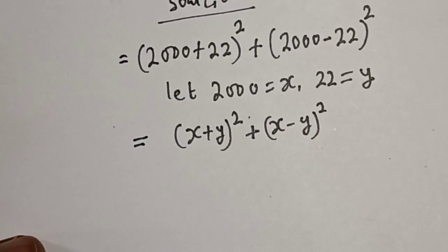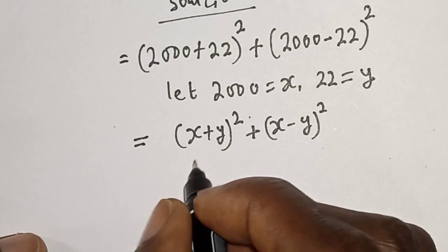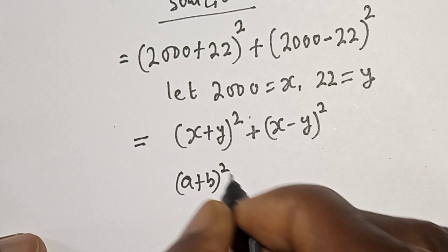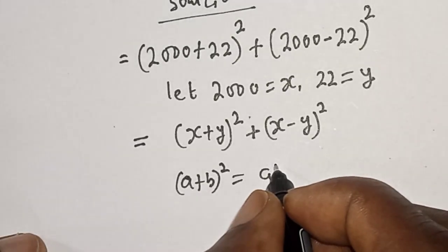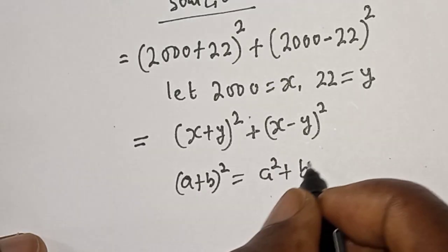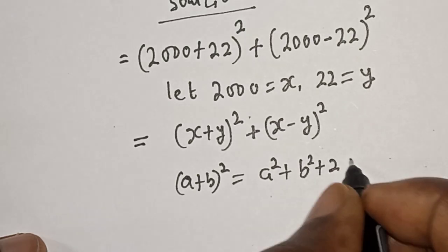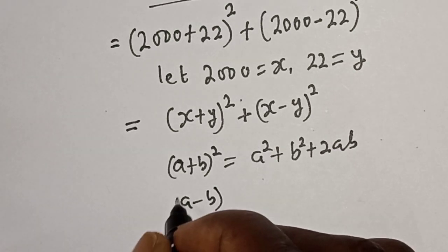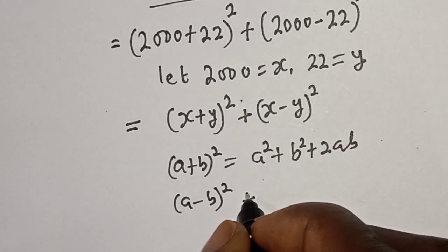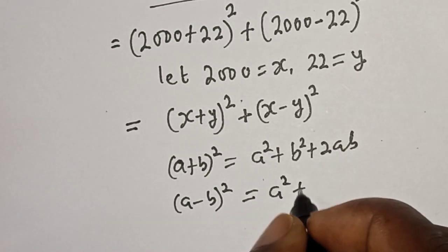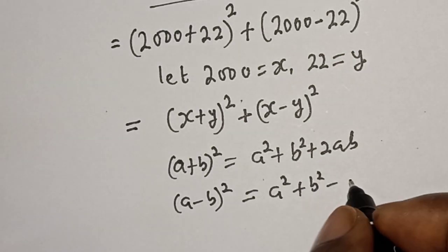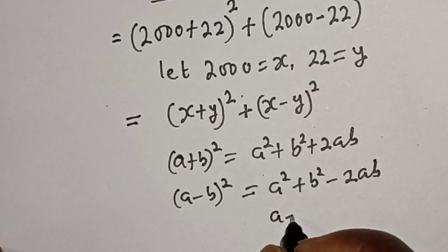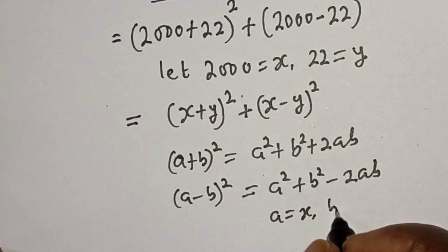Then take note of this: a plus b square is equal to a square plus b square plus 2ab. Also, a minus b square is equal to a square plus b square minus 2ab, where a is equal to x and b is equal to y.